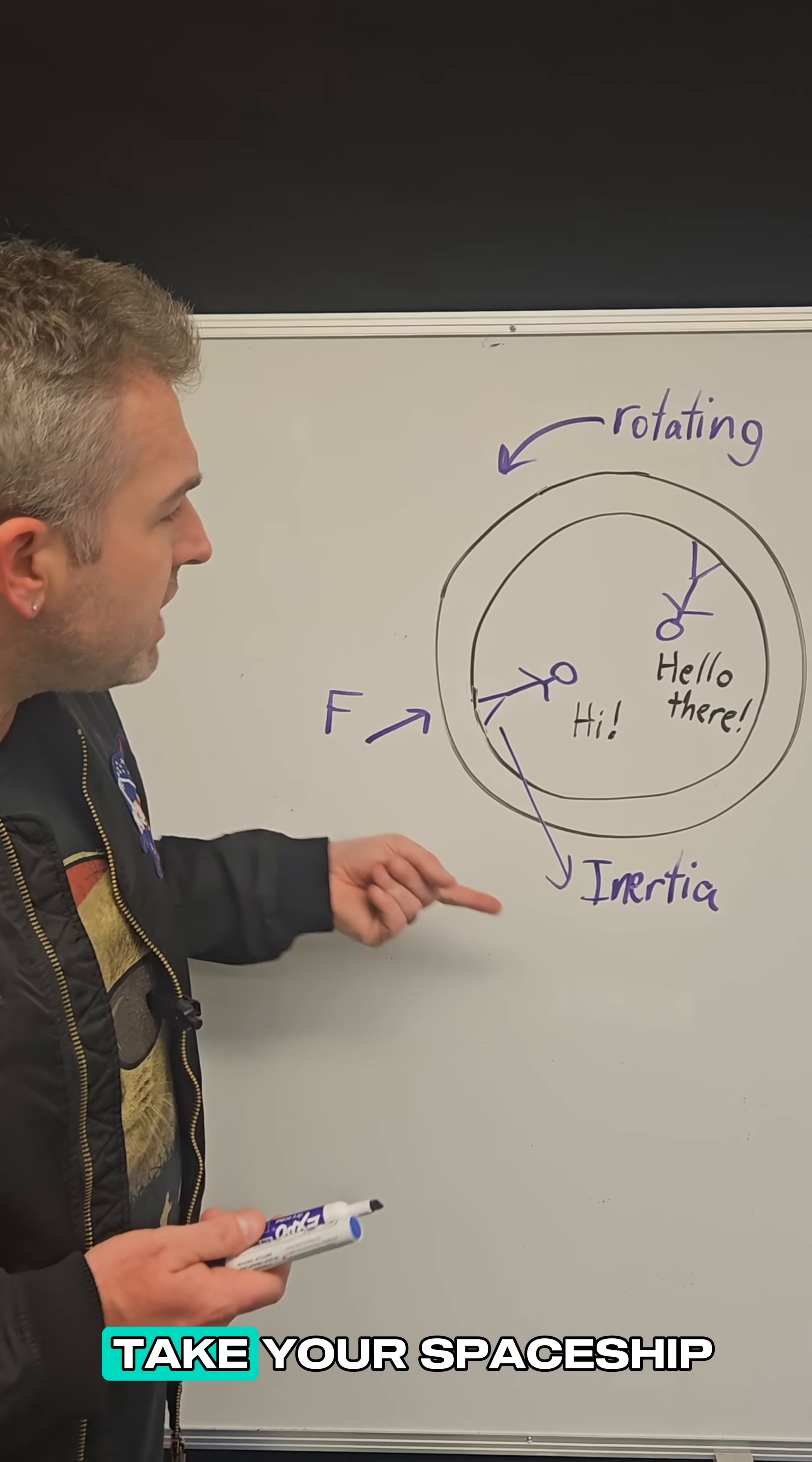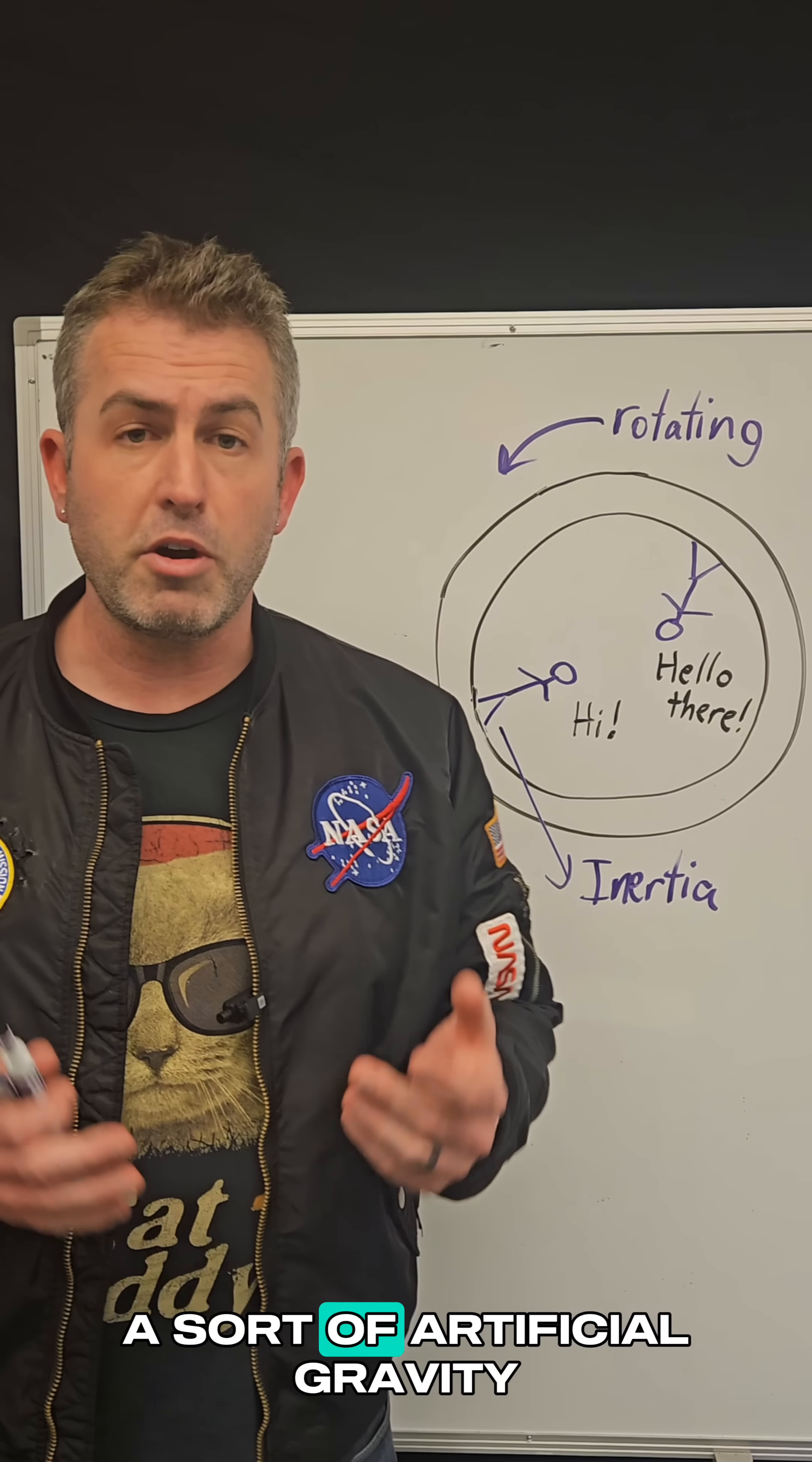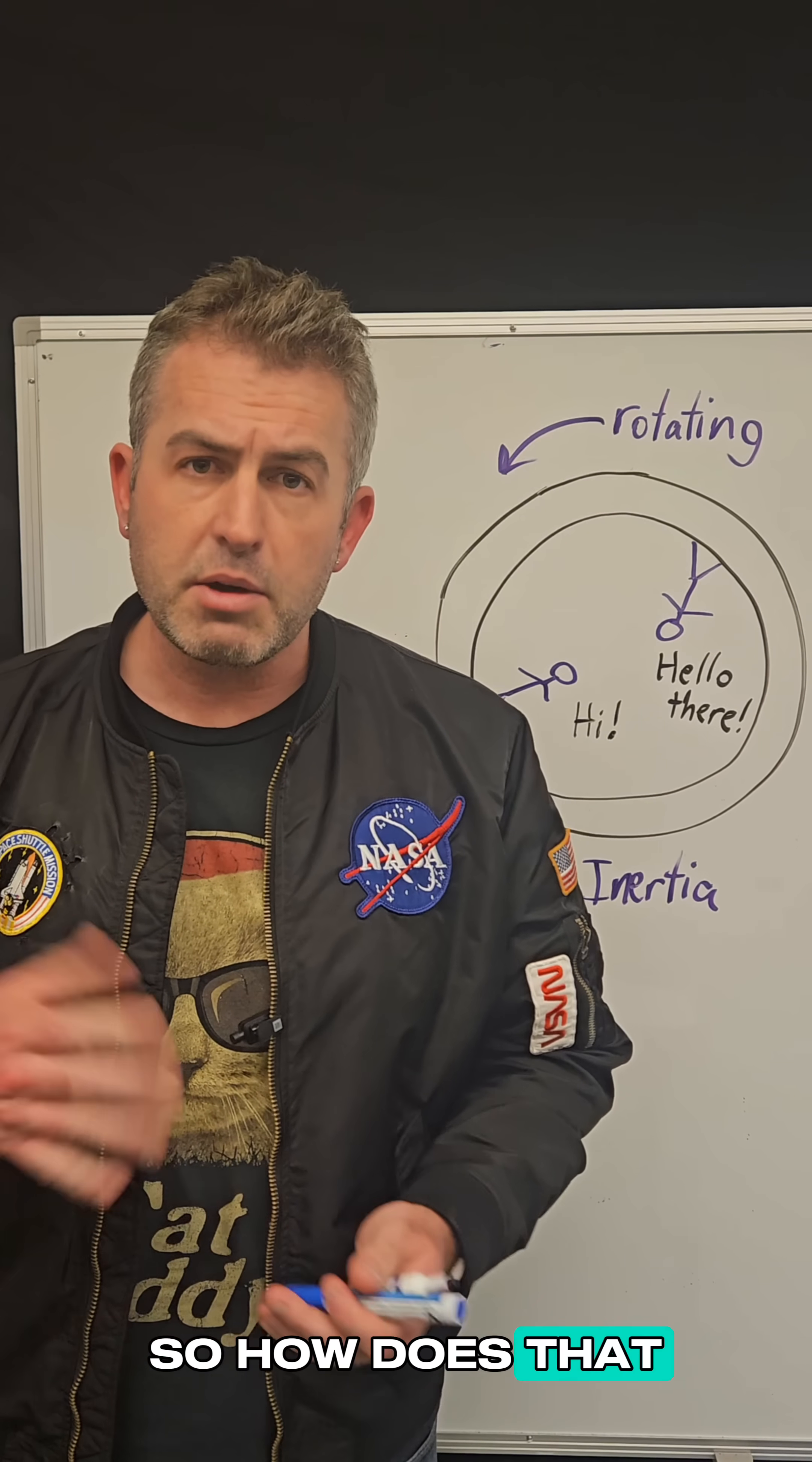And so if you take your spaceship and rotate it at some particular speed, you can actually create a sort of artificial gravity. So how does that work?